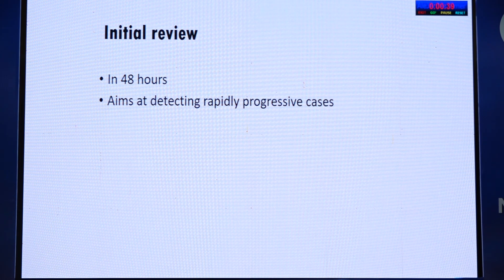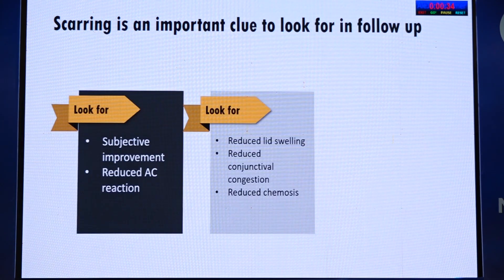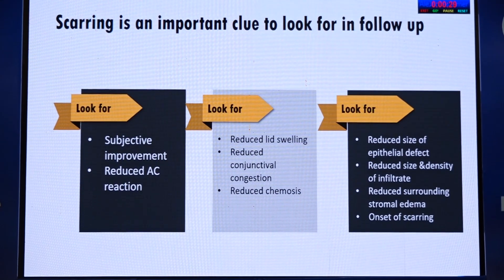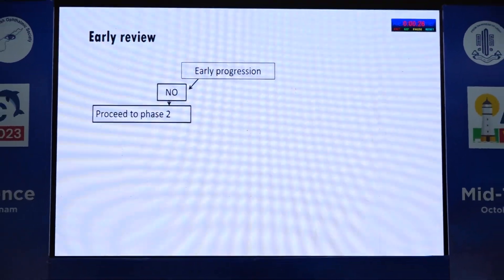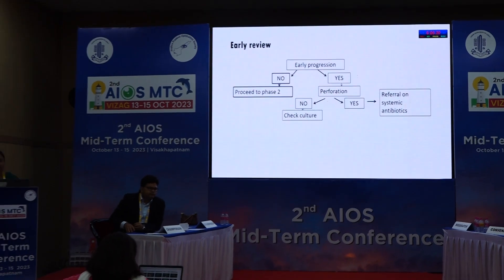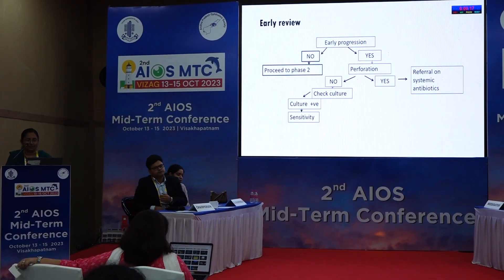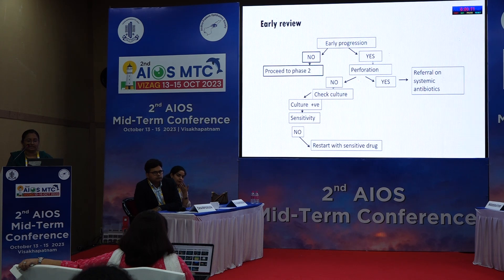Initial review should always be early — within 48 hours. The most important clue to look for is scarring, along with subjective improvement and reducing size of the epithelial defect and infiltrate. In the early review, if there is perforation, refer urgently. If no perforation, check the culture sensitivity report — within 48 hours — and verify that you are using a sensitive drop.